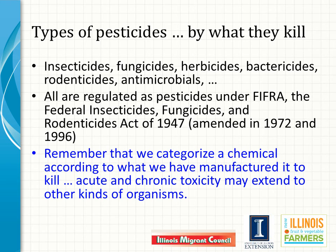We name pesticides according to what we intend to kill or control with them: insecticides for insect control, fungicides for control of plant pathogenic fungi, herbicides for weed control, and several other -cides are all pesticides, regulated under the Federal Insecticide, Fungicide, and Rodenticide Act and its amendments. It's important to realize that we use many substances to kill unwanted organisms—not just insects and weeds in crops, but bacteria in swimming pools, in bathrooms, and on kitchen counters. Many may be toxic to other organisms either immediately or over the course of repeated chronic exposures at low doses.